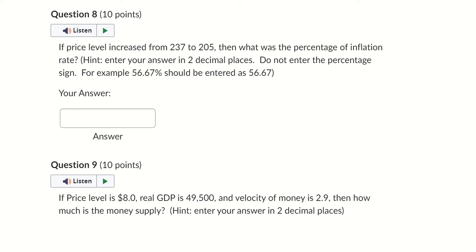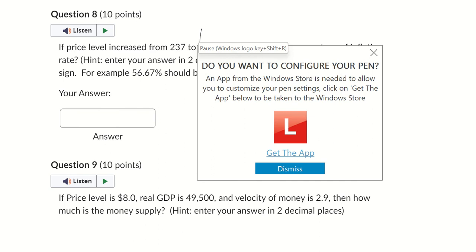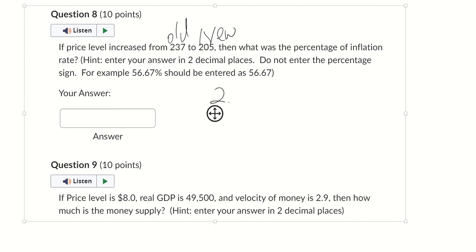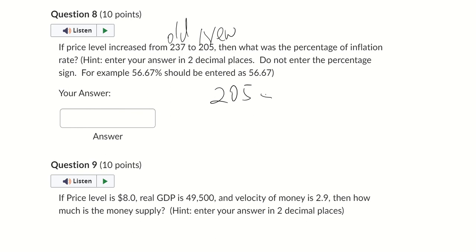So this is something we learned in Chapter 11 with the CPI and also the inflation. So remember, just use your new number minus the old number and divide it by the old number. So we're going to do 205 new number minus the old number 237 divided by the old number 237.